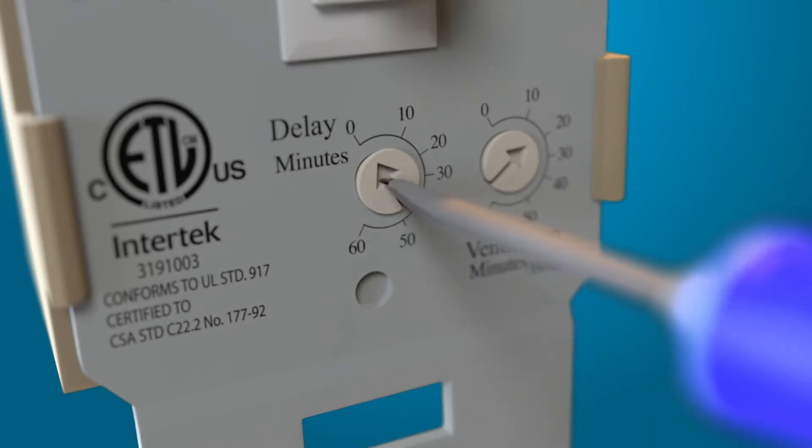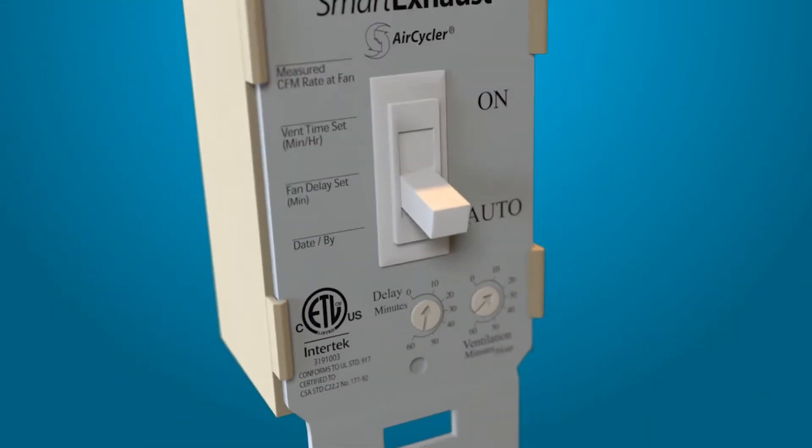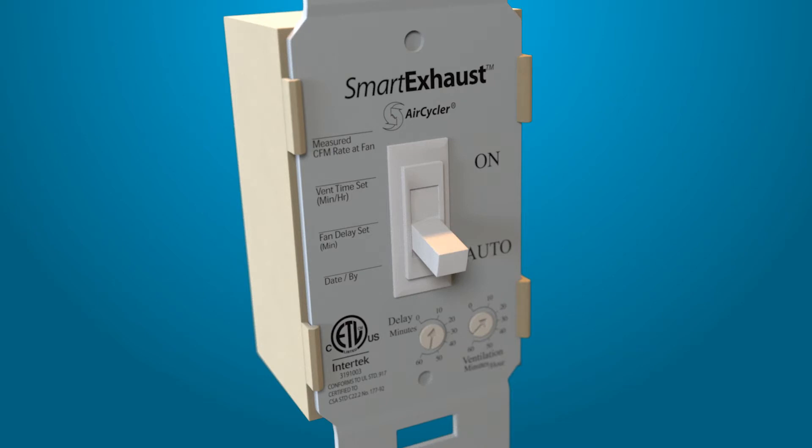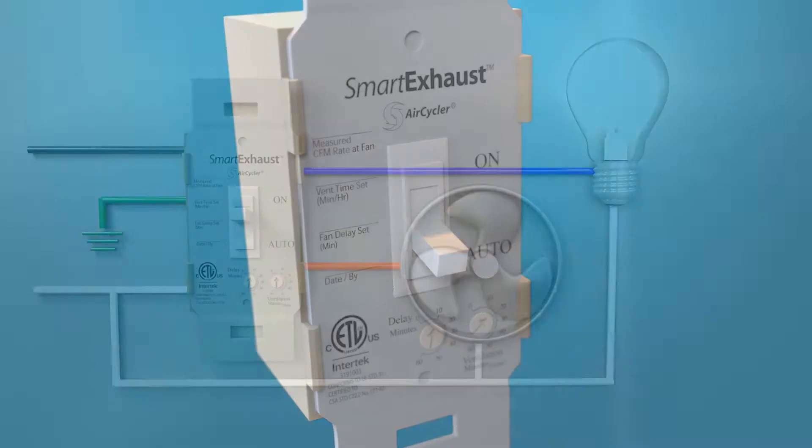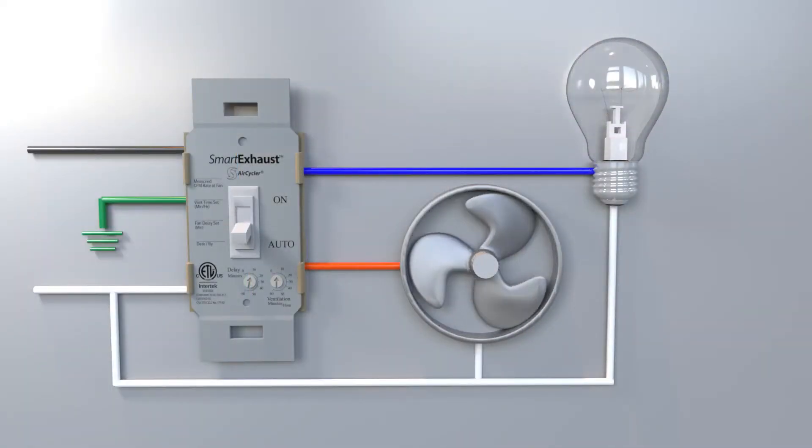Using the Delay setting, the user is able to set the number of minutes the fan should run after the Smart Exhaust switch has been switched to the Auto position. When the switch is in the Auto position, the fan continues to run for the set delay time.